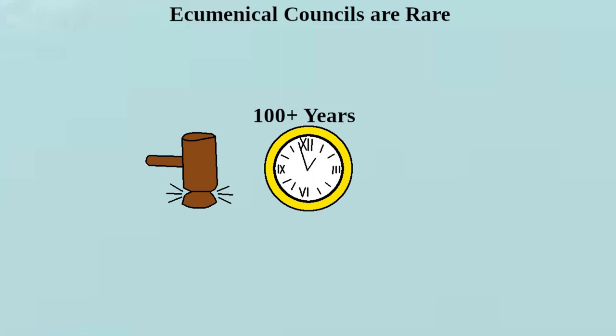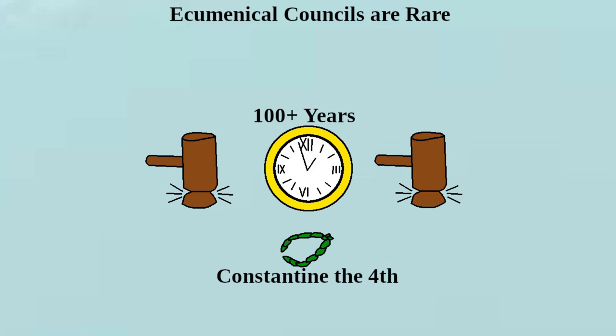Ecumenical councils have always been uncommon occurrences, and in this case, over a century had passed between the second council of Constantinople and the third. This council was mainly motivated by the emperor, Constantine IV, also known as Constantine Pogonatus, who wanted to settle all the religious disputes in the land.